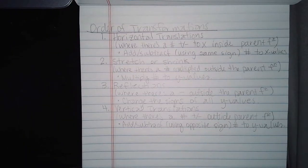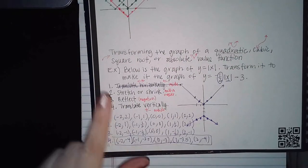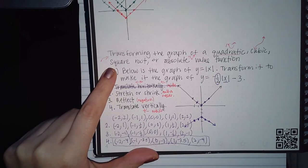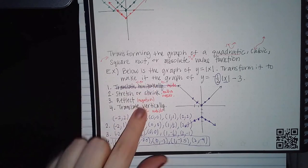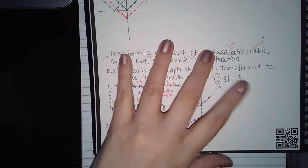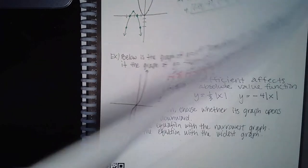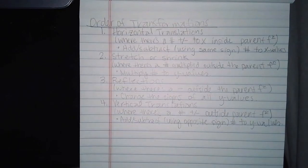This is a redo video because the computer program went down. The last topic we left off on was transforming the graph of a quadratic, cubic, square root, or absolute value function. I wanted to explain where this information was coming from, redo that problem, and then cover another example I hadn't gotten to just yet.